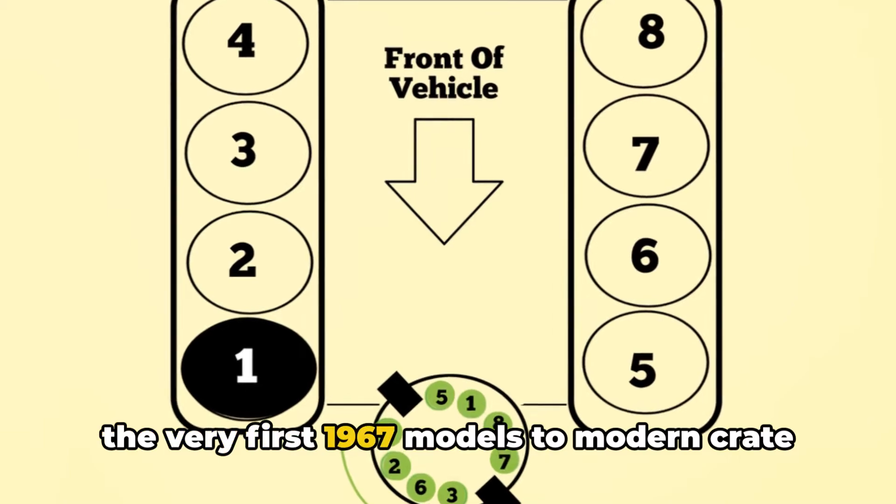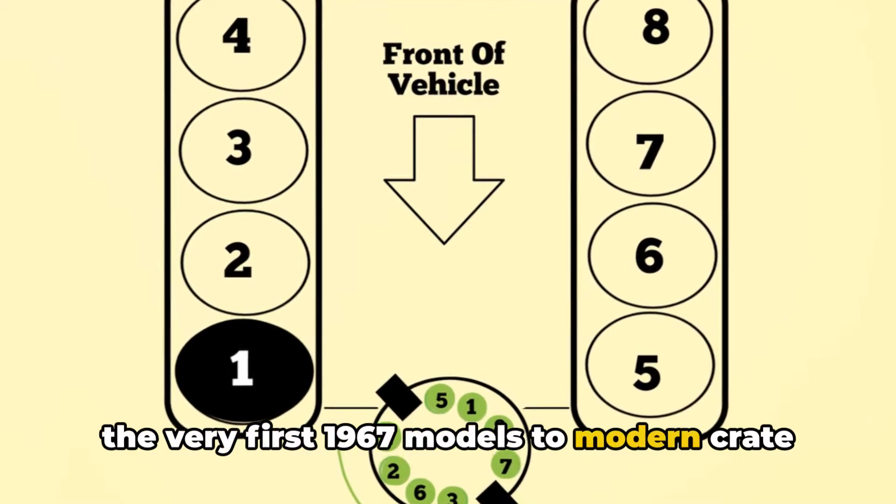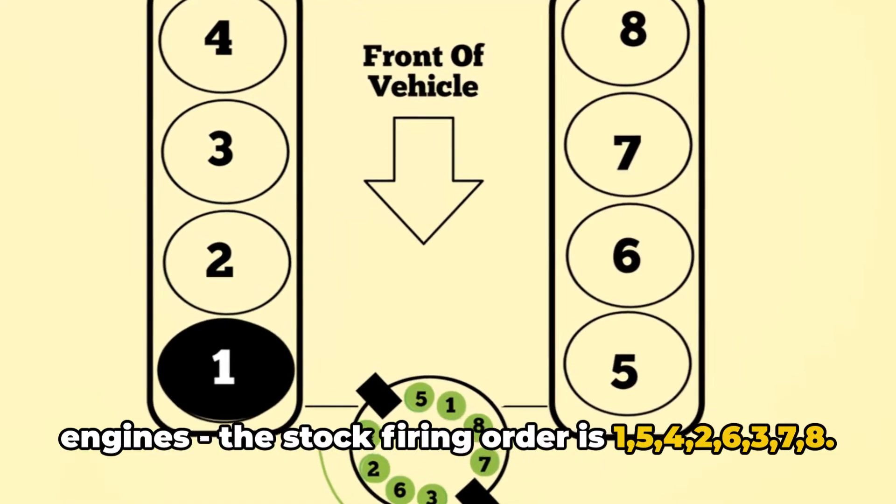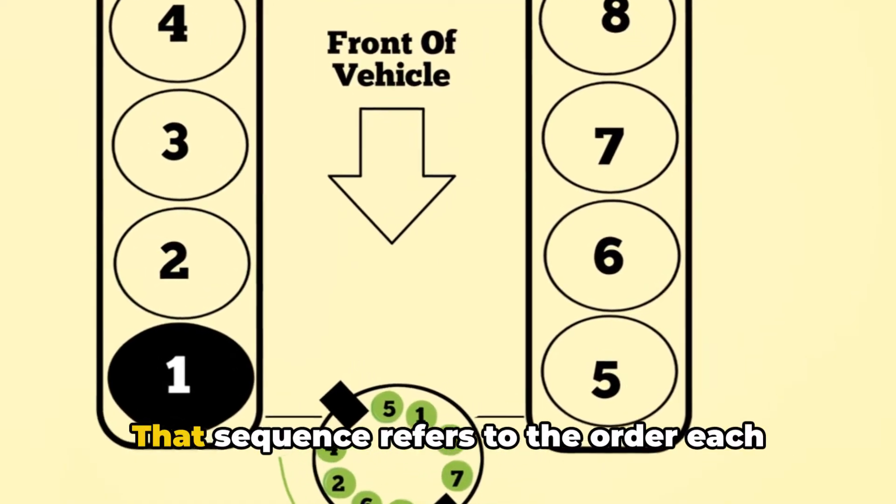On all 302 cubic inch Ford V8s, from the very first 1967 models to modern crate engines, the stock firing order is 1, 5, 4, 2, 6, 3, 7, 8.